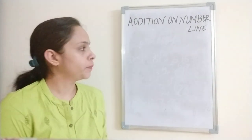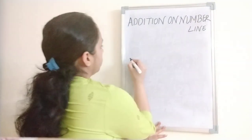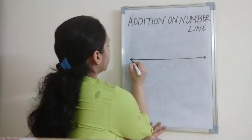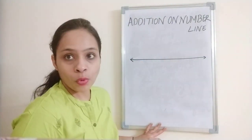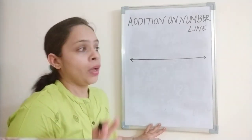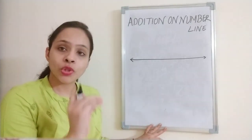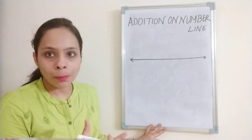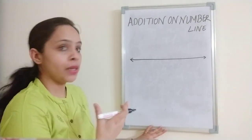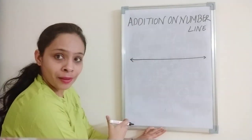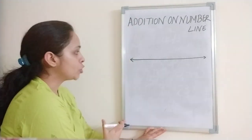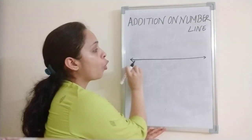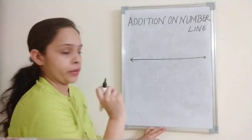Now what is a number line? What have I made on the board? I have made a line. Now when I write some numbers on this line, what do we call it? Number line. We have written numbers like this, up to down. Now I will write numbers on this line.